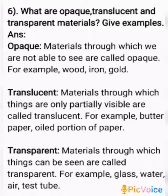Transparent: materials through which things can be seen clearly are called transparent. For example, glass, water, air, and a test tube.